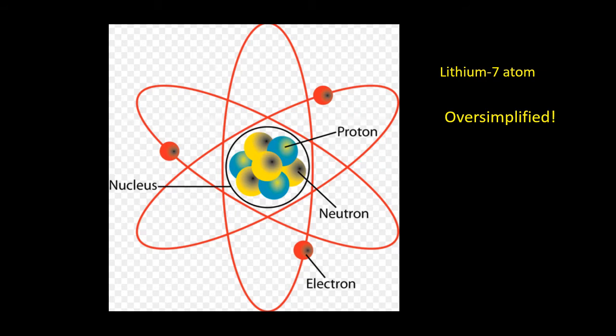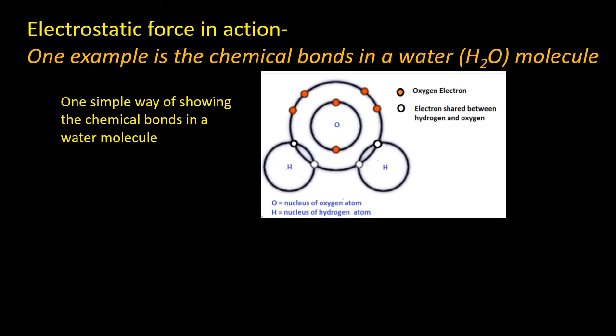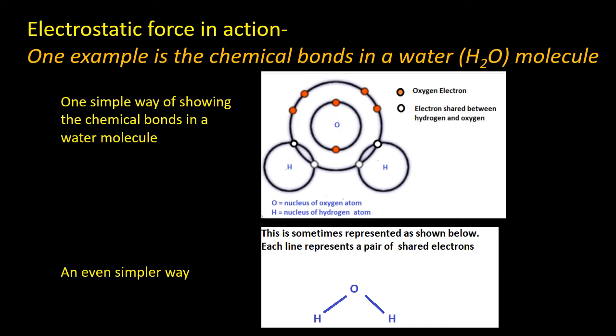The electrostatic force is responsible for chemical bonding, which causes atoms to combine into chemical compounds. So if we take the example of water, there's various ways of showing the chemical bonds in water. The oxygen atom shares some of the electrons between the hydrogen atoms. And these are shown as the white circles in the diagram. The red circles are the electrons just around the oxygen atom, which aren't shared with hydrogen. This can also be shown in an even simpler way, where each line represents a pair of shared electrons.